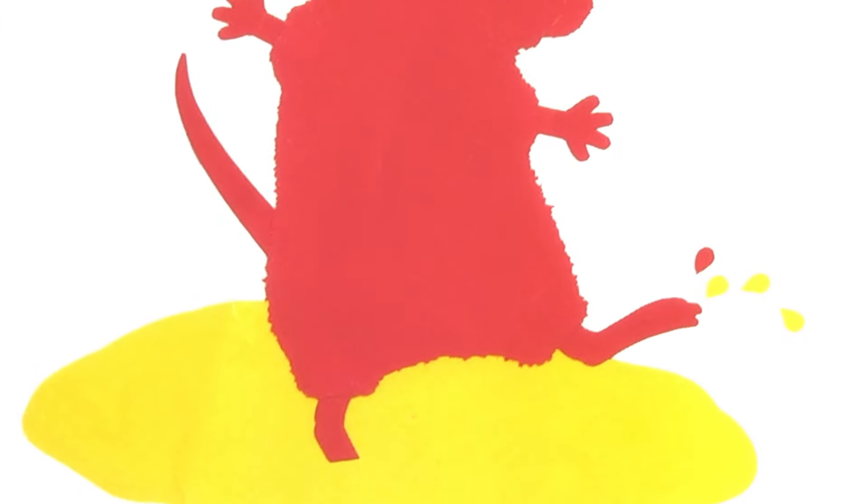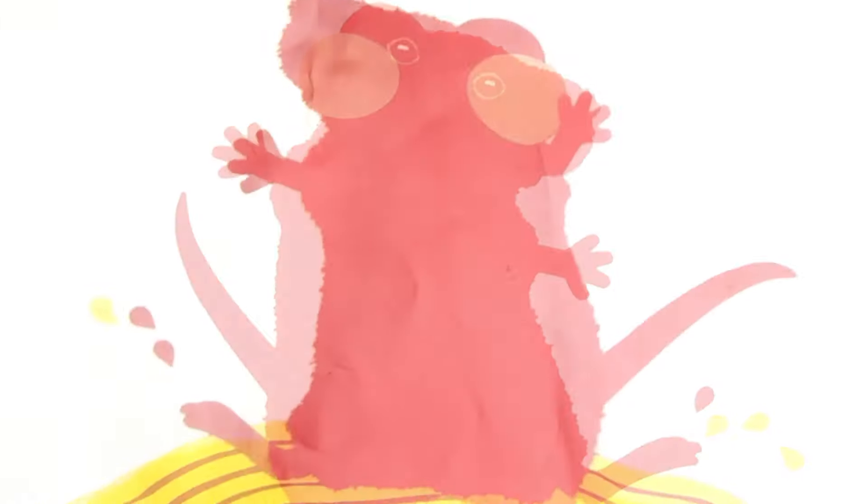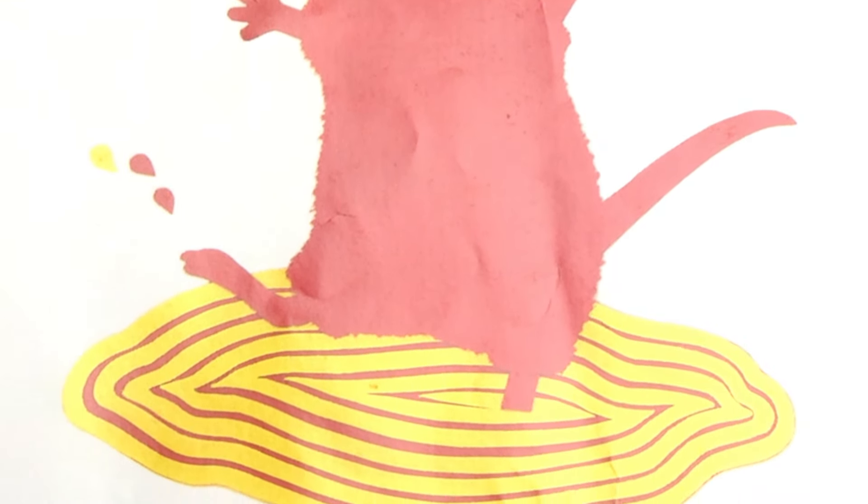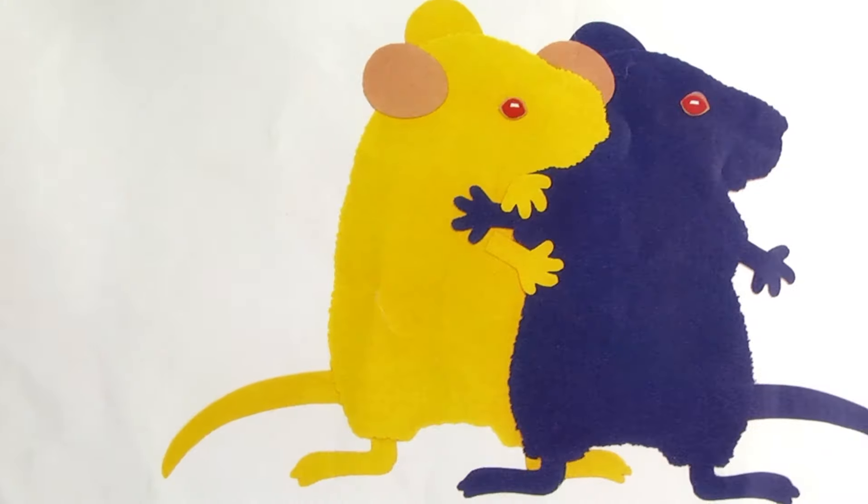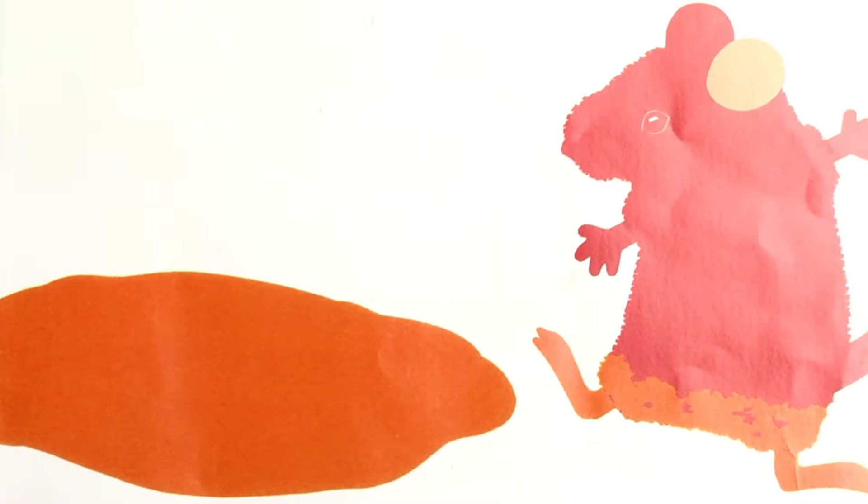The red mouse stepped into a yellow puddle and did a little dance. His red feet stirred the yellow puddle until... Look! he cried. Red feet in the yellow puddle make orange.